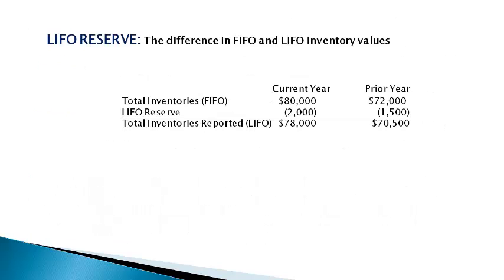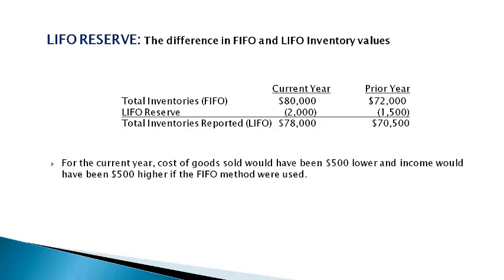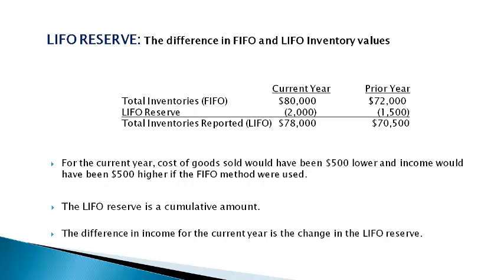FASB requires companies that use LIFO to disclose the difference in the value of inventory using LIFO and what the value of inventory would have been using FIFO. This is referred to as the LIFO reserve. Here is an illustration of the information provided in the footnotes of a company that values inventory using LIFO. This information enables investors to compare the company to another company that uses FIFO. The LIFO reserve simply means the difference in the value of inventory under FIFO and the value under LIFO. When inventory is different, cost of goods sold is different also. A higher inventory gives a lower cost of goods sold and vice versa. The LIFO reserve is a cumulative amount; the difference in the current year and the prior year is the change for the current year.